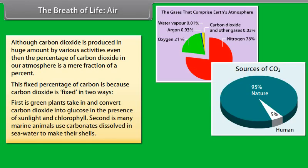First, the green plants take in and convert carbon dioxide into glucose in the presence of sunlight and chlorophyll. Second, many marine animals use carbonates dissolved in seawater to make their shells.